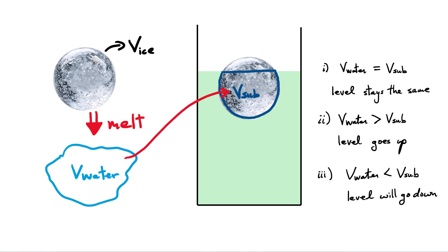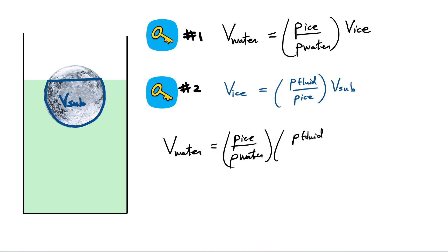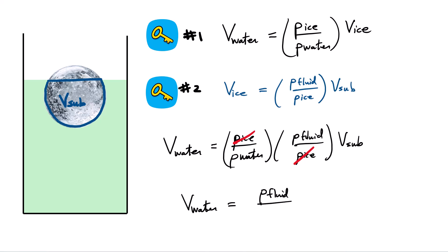Substituting our two equations together: take the first equation for volume of water and substitute the expression for volume of ice from the second equation. You get: volume of water equals density of fluid over density of ice, times density of ice over density of water, times V_submerged. The density of ice cancels out, leaving the final expression: volume of water equals density of fluid over density of water, multiplied by V_submerged.